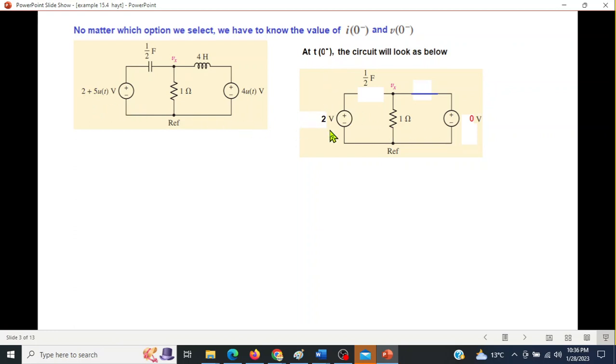The capacitor is open circuit because it is in steady state condition for a long time. The inductor will behave like a short circuit. Now we can calculate current and voltage. The voltage across the capacitor is 2 volts. The capacitor voltage is 0 volts, and this current flow is 0, so i0 equals 0. So v0 minus equals 2 volts, and i0 minus equals 0 ampere.